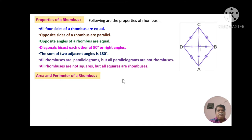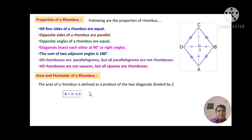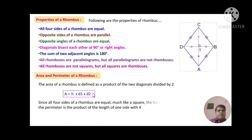Friends, now let us see the formula for the area and perimeter of a rhombus. The area of a rhombus is defined as the product of the two diagonals divided by 2, which can be written as A = (1/2) × d1 × d2. Since all four sides of a rhombus are equal much like a square, the formula for the perimeter is the product of the length of one side with 4, so P = 4 × side. These two formulas are important while calculating the area and perimeter of a rhombus.